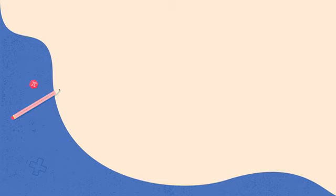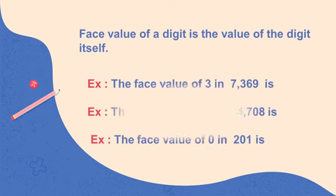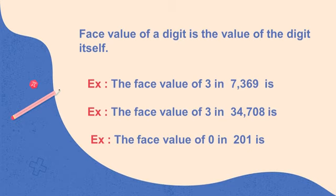Let's understand what is face value. The face value of a digit is the value of the digit itself, irrespective of its place in the number. For example, the face value of 3 in 7,369 — according to our definition, the face value of digit 3 is 3 itself.